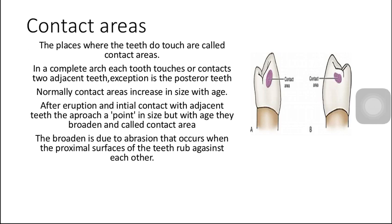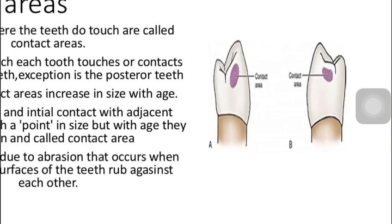Normally, contact area increases in size with age. After eruption and initial contact with adjacent teeth, they approach a point in size. But with age, they broaden and are called contact areas. After sharp eruption and initial contact, adjacent teeth touch each other at a point which then broadens due to abrasion that occurs when the proximal surfaces of teeth rub against each other. Here we have a diagram that shows the contact area of two teeth.